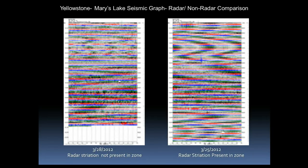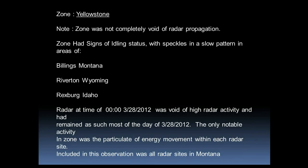Hello everyone. This is Yellowstone's Mary Lake Seismograph Radar Non-Radar Comparison. The graph on the left is from 3-28-2012, radar striation not present in zone. The graph on the right is from the 25th of March 2012, where radar striation was present in zone. The zone was Yellowstone.